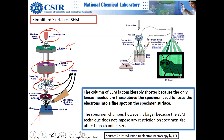Those outer electrons in the outer orbital are highly influenced by bonding and the surrounding chemical environment, so they do not carry any identity of the atom they originally belonged to. This is why secondary electrons do not have Z contrast.